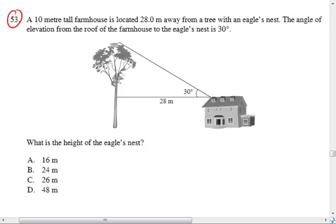Question number 53. A 10 meter tall farmhouse is located 28 meters away from a tree with an eagle's nest. The angle of elevation from the roof of the farmhouse to the eagle's nest is 30 degrees.